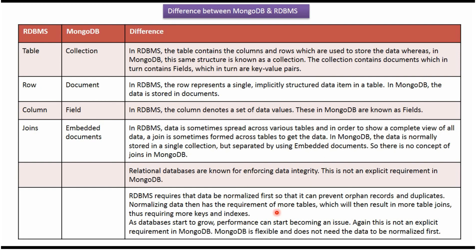RDBMS requires the data to be normalized first so that it can prevent orphan records and duplicates. When you do normalizing, it requires more tables, and when you have more tables, it results in more table joins. Then it requires more keys and indexes, and as the database grows, performance can start becoming an issue. This is not an explicit requirement in MongoDB — MongoDB is flexible and does not need the data to be normalized first.